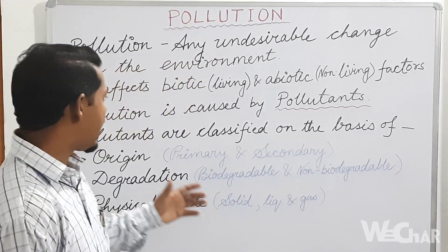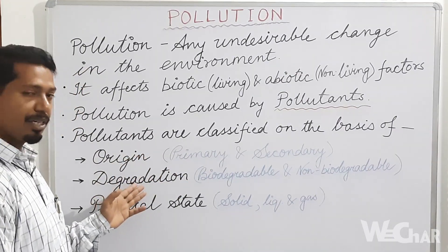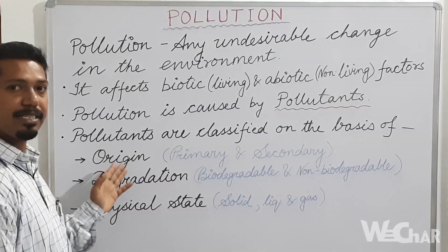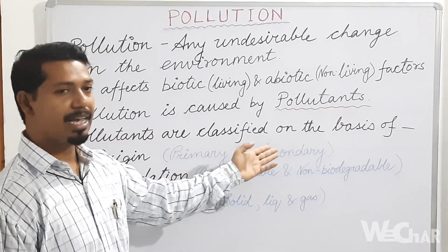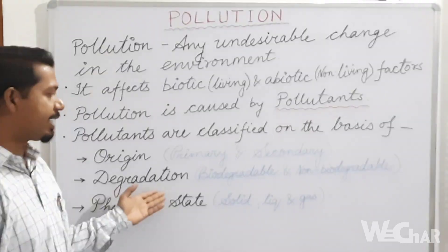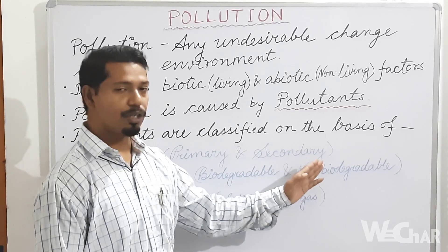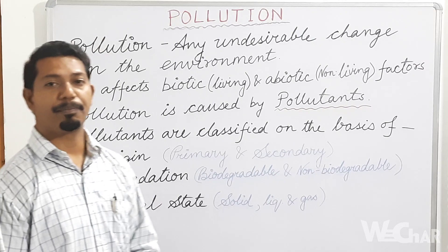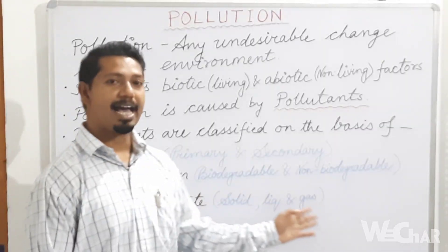Pollutants are classified on the basis of origin, degradation, and physical state. On the basis of origin, pollutants are categorized as primary and secondary. On the basis of degradation, they are categorized as biodegradable and non-biodegradable. And on the basis of physical state, they are classified as solid, liquid, and gas.